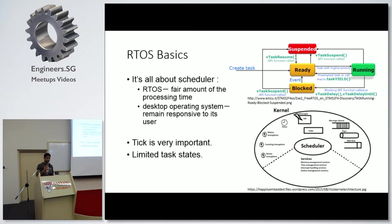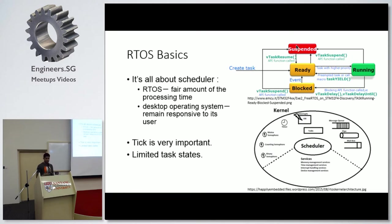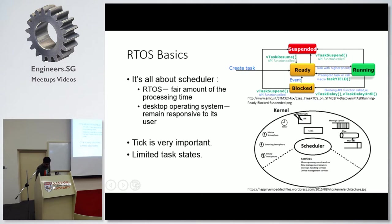The third important thing is you have limited task states. If you can see this diagram — forgive me for the crazy URLs, I don't like to use other people's work without credit — you just have ready, running, blocked, and suspended. But if you look at Linux, you have at least 20 different task states apart from these. These are all different components of an RTOS. The whole bubble here represents every software feature an RTOS can give you: message queues, pipes, mailboxes, mutex, semaphores. These things change from RTOS to RTOS, but this is the most basic one.